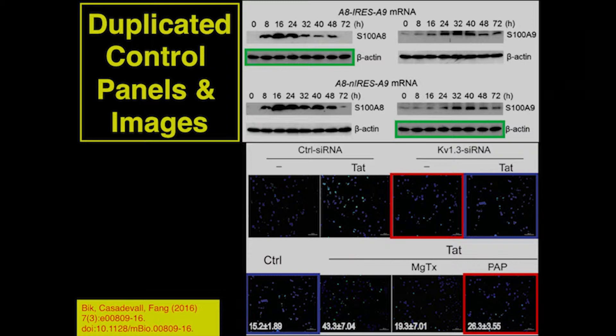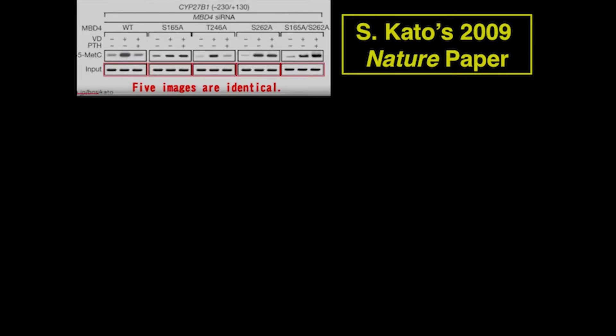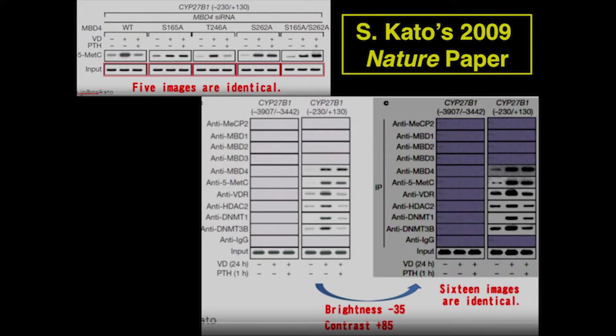Here is a classical example of how duplication was used to manipulate data. In 2009, Dr. Cato — who had already retracted many papers — published a paper in Nature. In this paper, five images are exactly the same, used five times. Even more astonishing, when you adjust the contrast and bring it up, you can see that 16 panels all came from one single image.